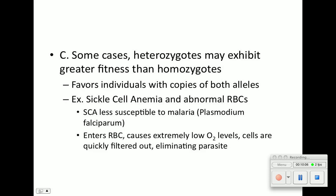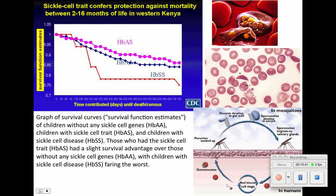In some cases, heterozygotes — carriers — have greater fitness than homozygotes. Sickle cell anemia produces abnormal, sickle-shaped red blood cells. People with sickle cell anemia are less susceptible to malaria, which is caused by Plasmodium. What malaria does is: the plasmodium enters the red blood cell, causes extreme low oxygen levels, cells are quickly filtered out, and the parasite gets eliminated. So if you are a carrier for sickle cell anemia, it's actually an advantage. Carriers (AS genotype) show higher fitness than those without the sickle cell allele.